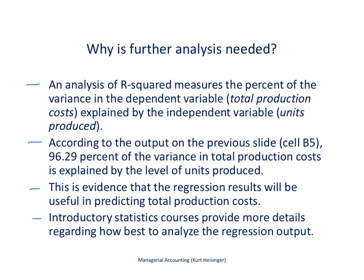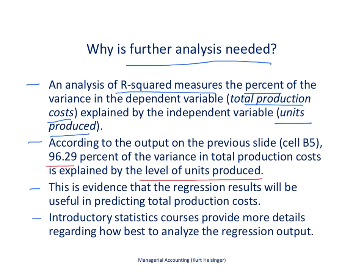Most statistics experts would tell you that further analysis is needed — it's not good enough to simply enter the data, take the output, and use it as though it's 100% accurate. One of the first places to start assessing the information is with the R-squared measure. R-squared tells us the percent of the variance in the dependent variable — total production costs — that is explained by the number of units produced. According to the R-squared statistic in the printout, 96.29% of the variance in total production cost is explained by the level of units produced, which means this is a pretty strong way to predict cost and will give a fairly accurate estimate going forward.